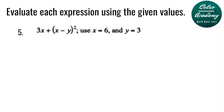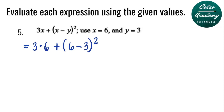Question number 5. Evaluate the expression 3x plus the quantity x minus y to the 2nd power, using x equals 6 and y equals 3. So we have 3 times 6 plus the quantity 6 minus 3 to the 2nd power. The first thing we need to do is simplify the grouping symbol: 6 minus 3, which becomes 3 to the 2nd power.